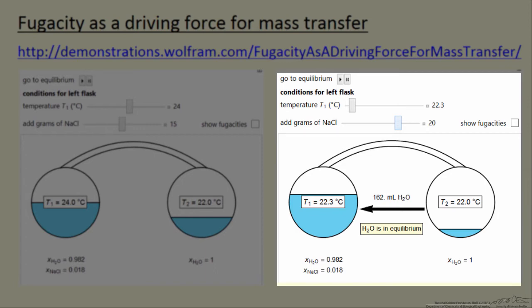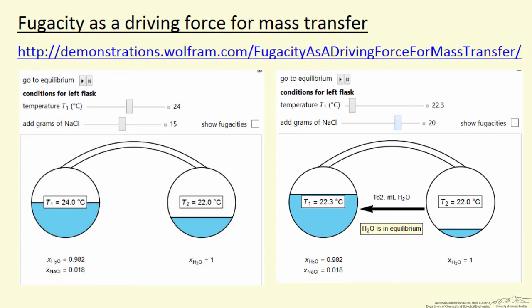Including how much water moved in this case from the right side to the left side, and now the water is in equilibrium and what this means, the fugacities are the same on both sides, in both flasks for water. And the simulation allows you to check this box, and then it displays the fugacities at the beginning.